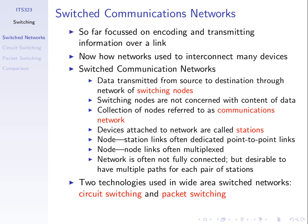A fully connected network would mean that four has a direct link to one, two, three, five, six, and seven. Generally it is not a fully connected network — that is, the network, some of the nodes may connect to some of the other nodes but not to all of them. Often there will be multiple paths between each pair of stations.